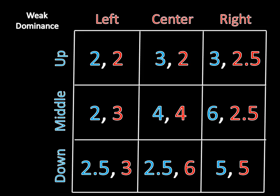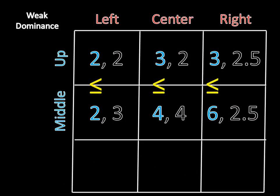Now let's take a look at an example. So this is a 3x3 game, and we should find that middle weakly dominates up for player 1. And this is easy to verify if we isolate things. If player 2 moves right, then middle is worth 6, whereas up is only worth 3. If player 2 moves center, then middle is worth 4, whereas up is only worth 3.